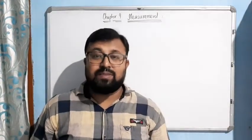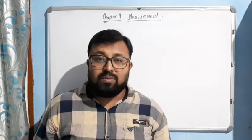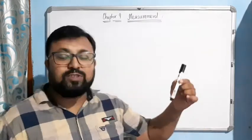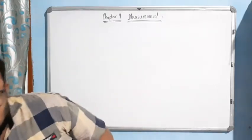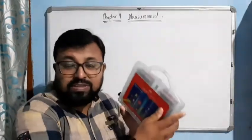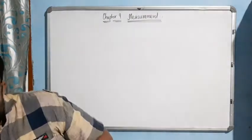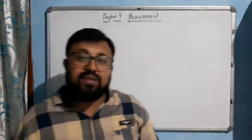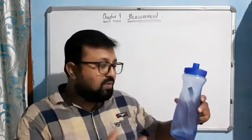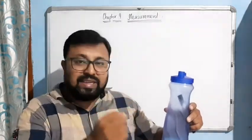Measurement includes measuring of length, weight, or capacity. For example, measuring the length of a pen, the weight of a box — how much it weighs — and the capacity of a bottle, meaning how much water it can hold. We have to measure all these things in some unit.